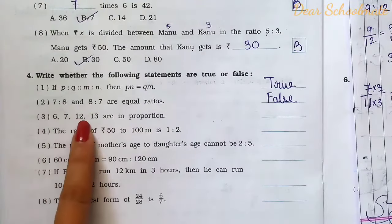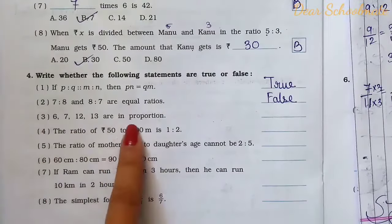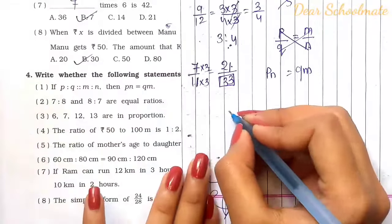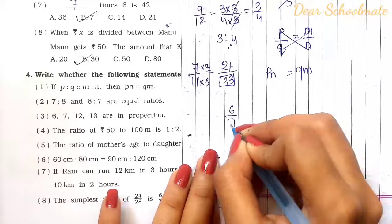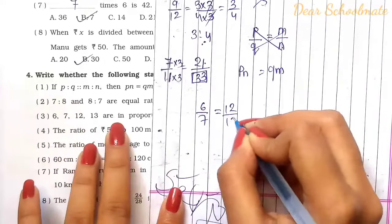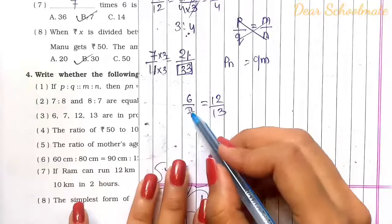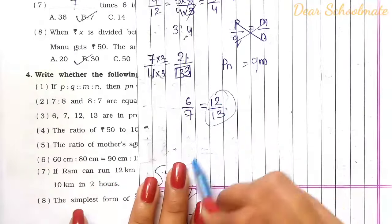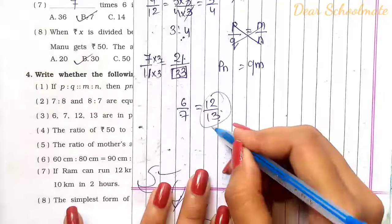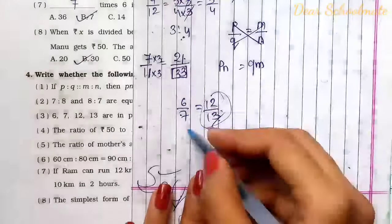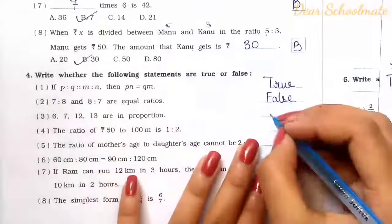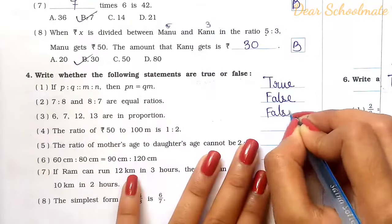Number 3: 6, 7, 12, 13 are in proportion. We check: 6 by 7 and 12 by 13. Since 13 is a prime number, 12 by 13 cannot be simplified further. These are not equal, so they are not in proportion. The statement is false.